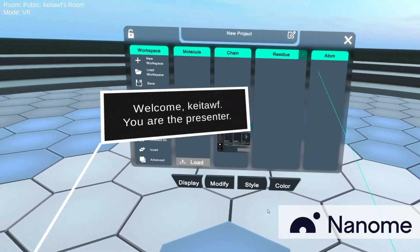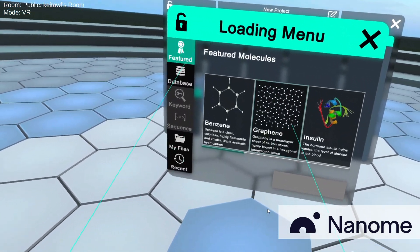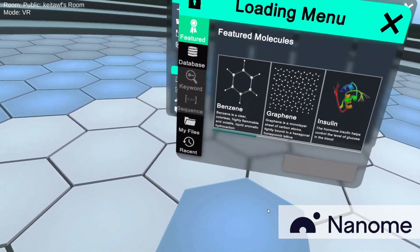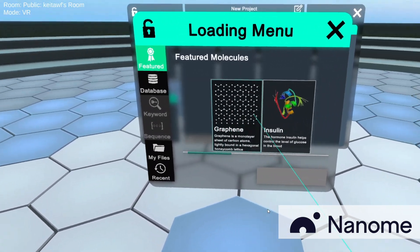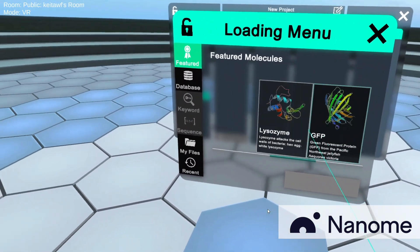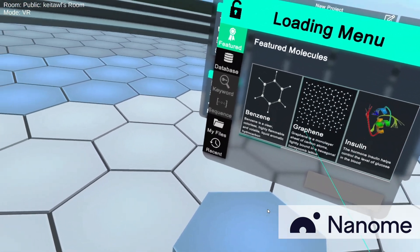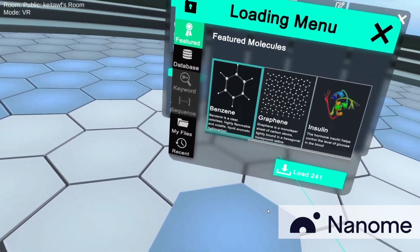Now you can close this out, and if you lose it, you can always go to load, and you'll be seeing this menu. And you can go into the featured molecules, which allows you to load anything from macromolecules to graphene to something as simple as a benzene ring.